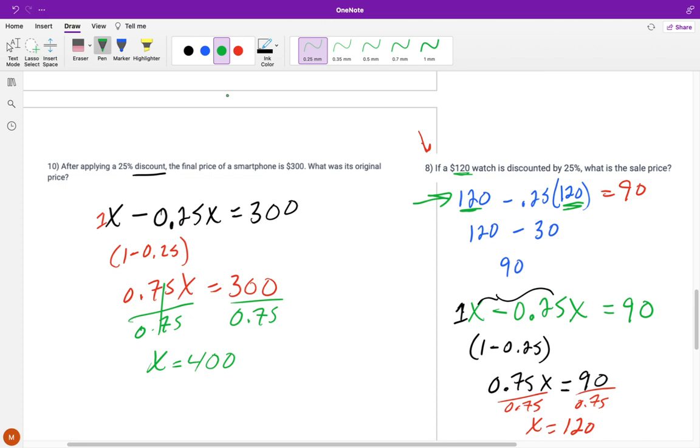And then we can check it out. We can do 400 times 0.25, which is then equal to 100. And 400 minus 100 is 300. So then we know, yes, we did this right. After I applied a 25% discount, it is in fact 300.